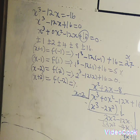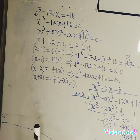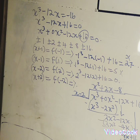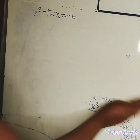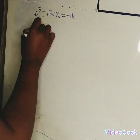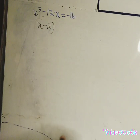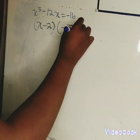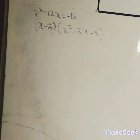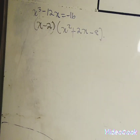The quotient we want is x squared plus 2x minus 8. I'll erase the board to factorize and solve the equation. So we have our quotient x squared plus 2x minus 8. Our first bracket is x minus 2, and our second bracket is x squared plus 2x minus 8.